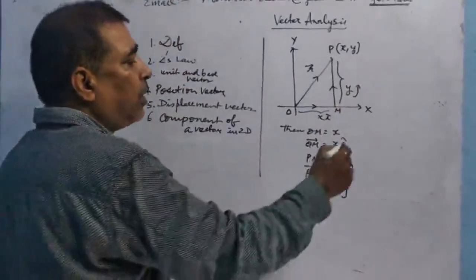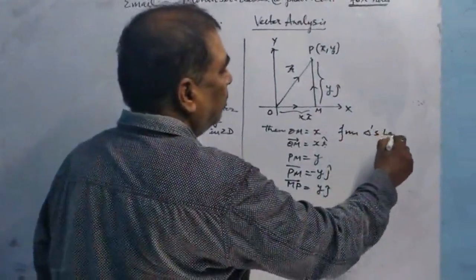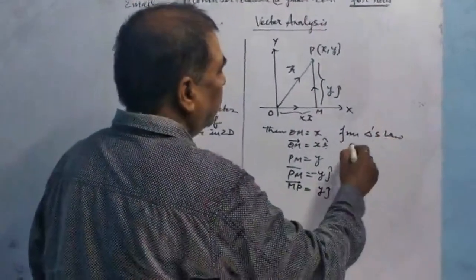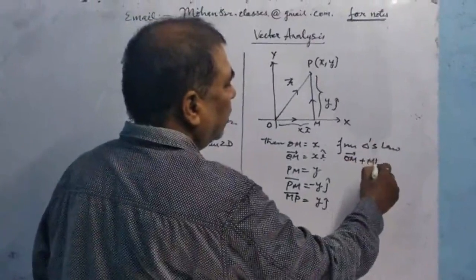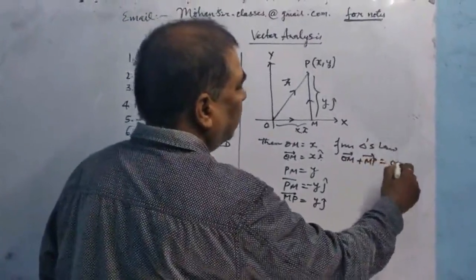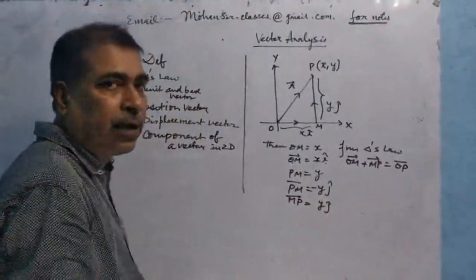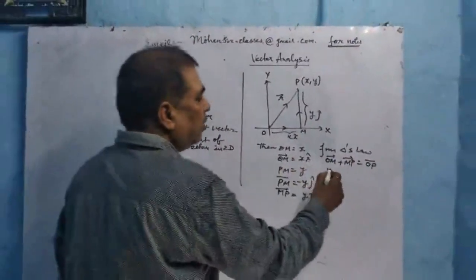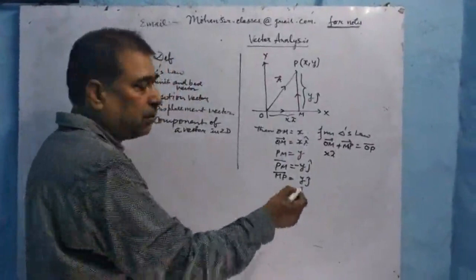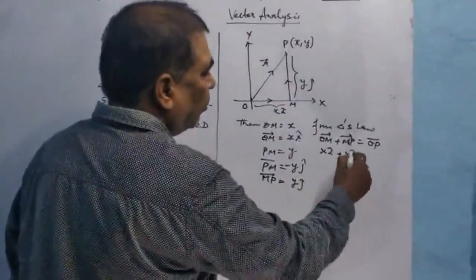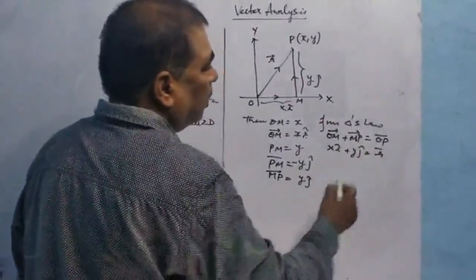From the Triangle's Law, OM plus MP is equal to OP. Here OM equals xi, MP equals yj, and OP equals r. So the position vector r equals xi plus yj.